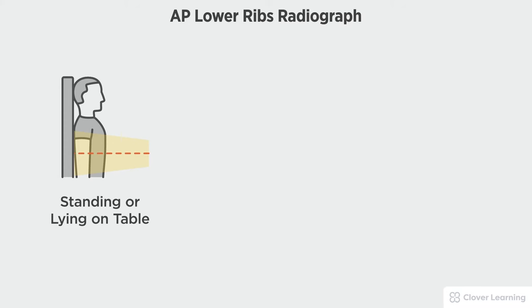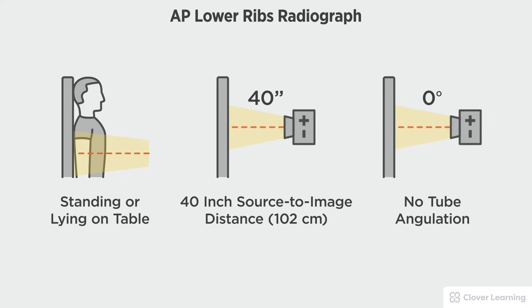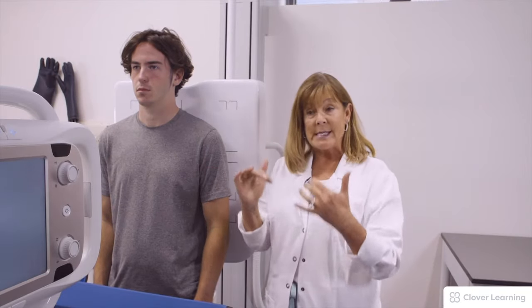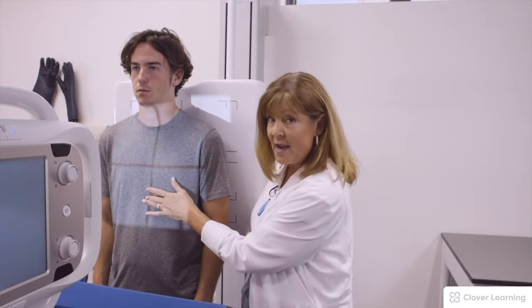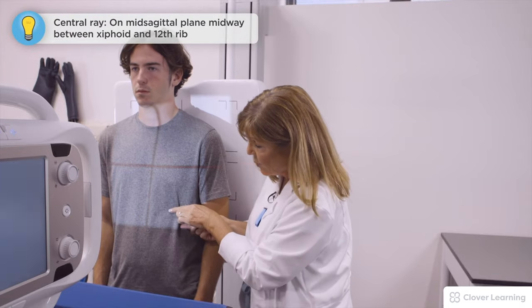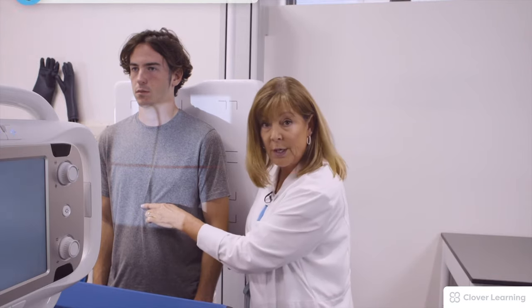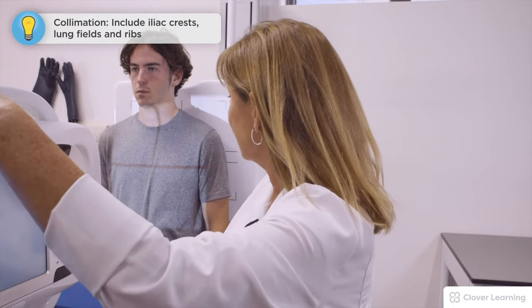In this view we will be demonstrating the AP lower ribs. The AP lower ribs should be performed with the patient standing at the upright bucky or lying on a table with a 40-inch source to image distance and no tube angulation. For AP below the diaphragm, the central ray is brought down to halfway between the xiphoid and the lower rib, using the mid-sagittal plane.